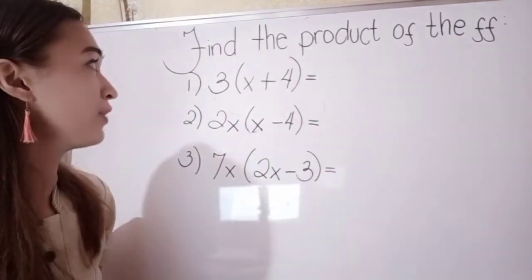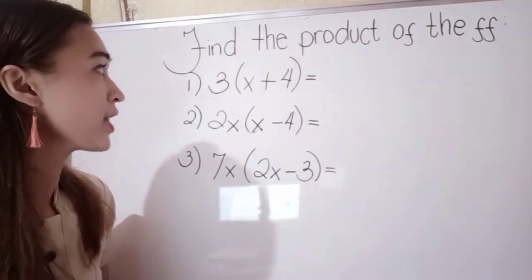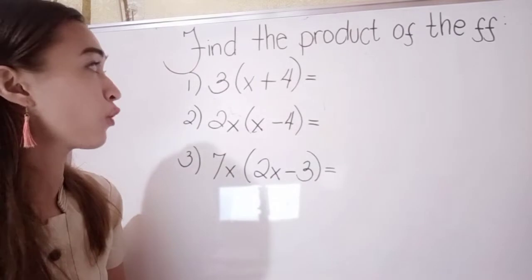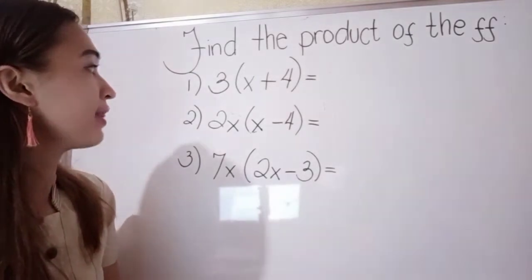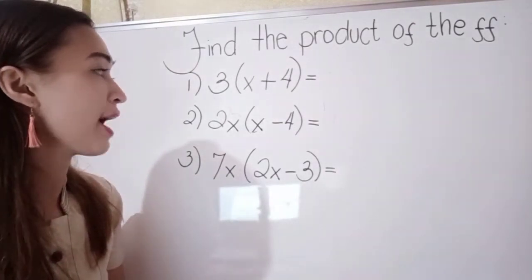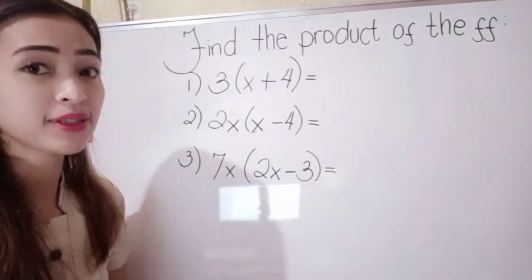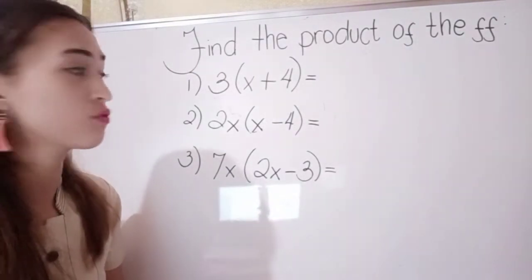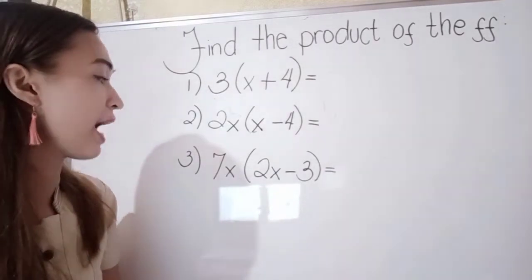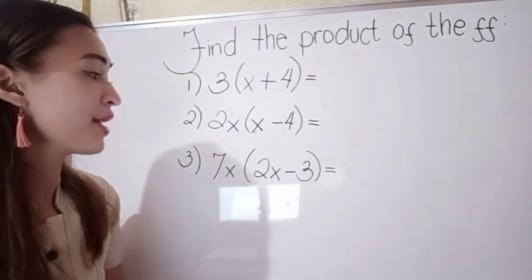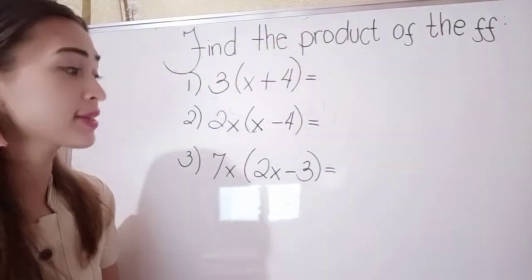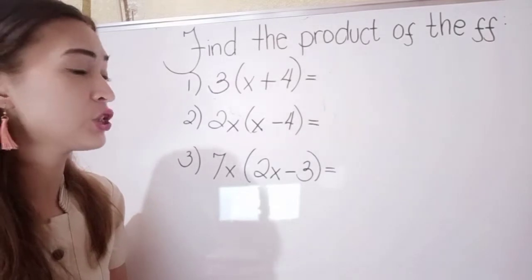Number 1: 3 times x plus 4. Number 2: 2x times 3 minus 4. And number 3: 7x times 2x minus 3.